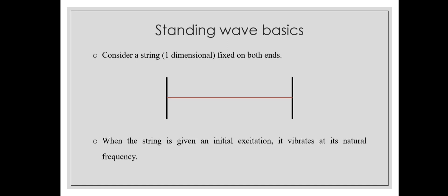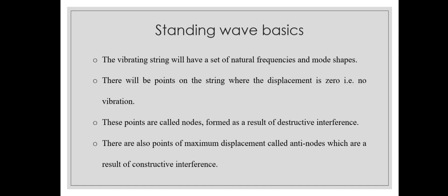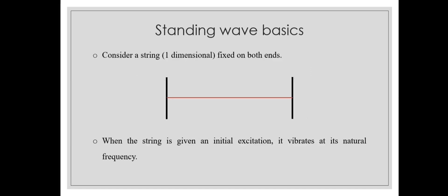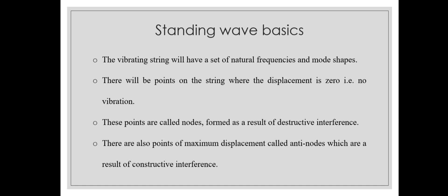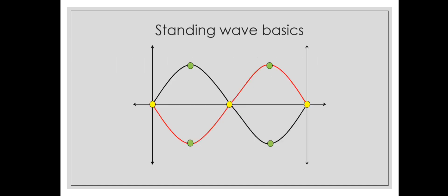The points at the end of the string are called nodes. In contrast, there are points of maximum displacement called antinodes, which are a result of constructive interference. For the first fundamental frequency, antinodes will be somewhere in between. The yellow points represent the nodes — regions of zero displacement, no vibration — as a consequence of destructive interference. The green points, a consequence of constructive interference, are called antinodes, which are vibrating with maximum amplitude. If you want to learn more about stationary standing waves, please check the link in the description below.